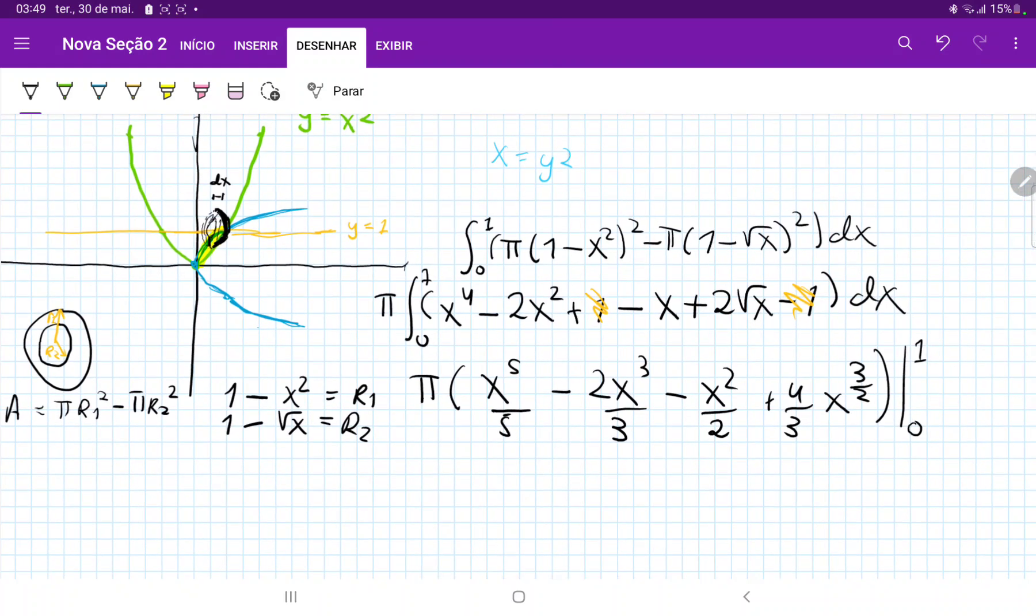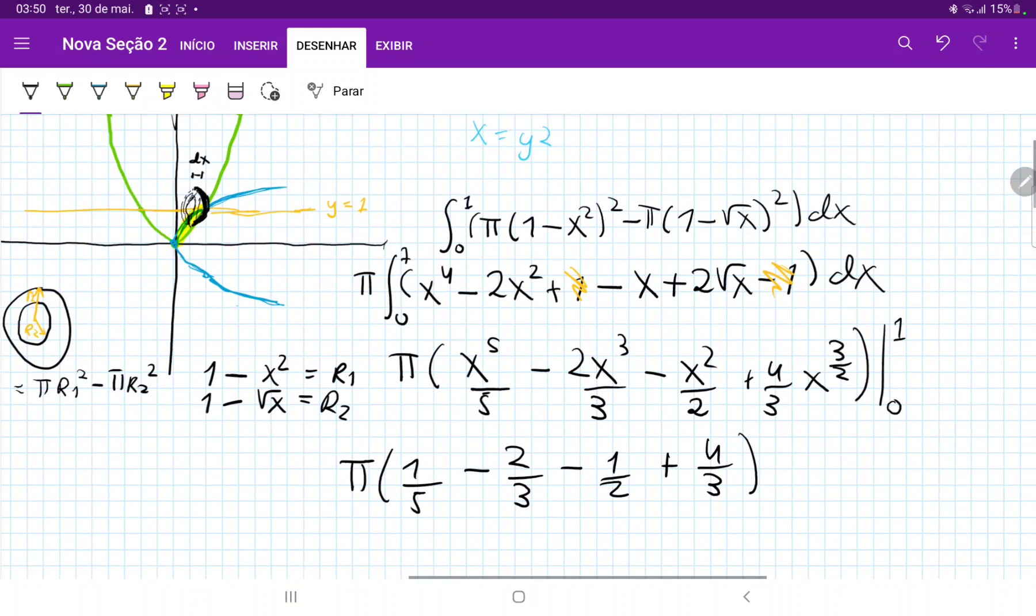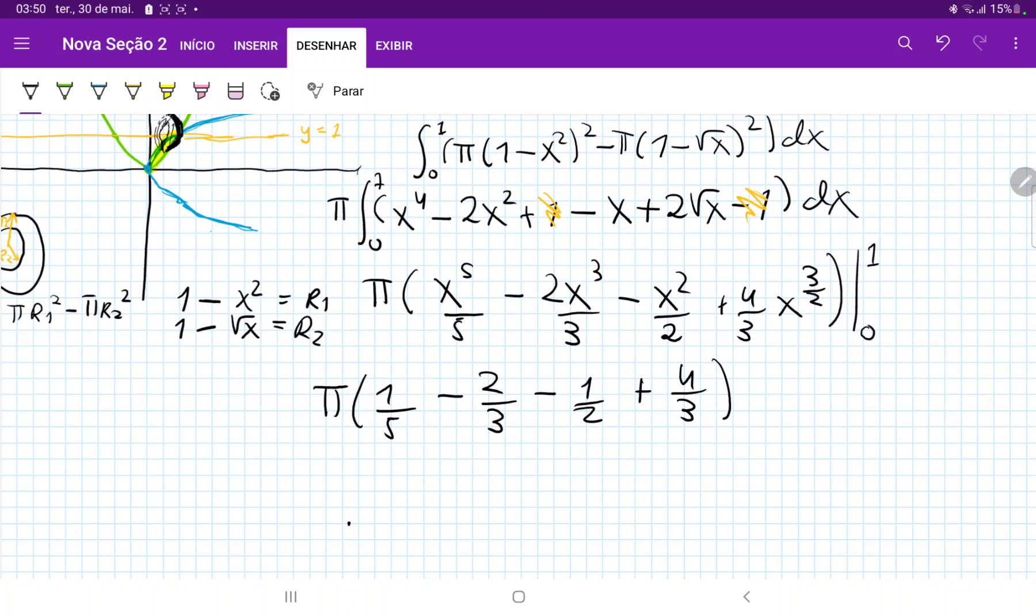All right, so this is, we're just going to apply the upper boundary, because the lower boundary, everything's going to go to 0, and it will disappear. So this is pi times, let's see, 1/5, minus 2/3, minus 1/2, and then plus 4/3, which is equal to, let's see, pi times 1/5, plus 2/3, and then minus 1/2, right?